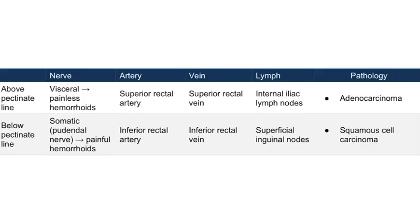This table summarizes the information just presented. In it you will find the important information such as the innervation, arterial supply, venous supply, and lymphatics above and below the pectinate line.